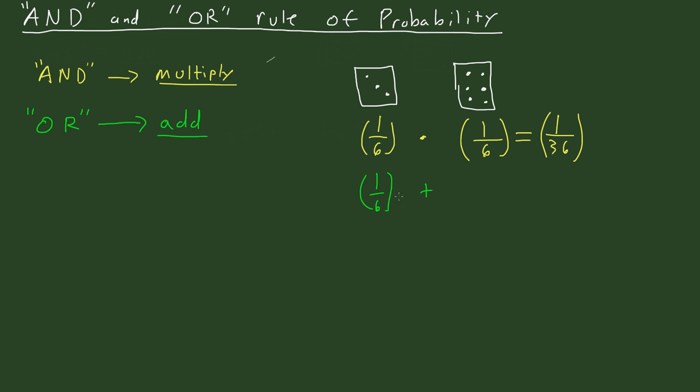And now this time, since we want a 3 or a 6, we add. Obviously the probability of getting a 6 is the same, 1/6, and you add these two fractions, you get 2/6, which is just 1/3.